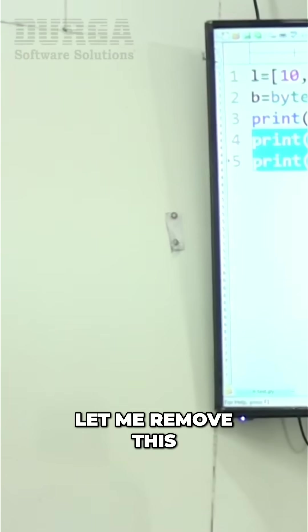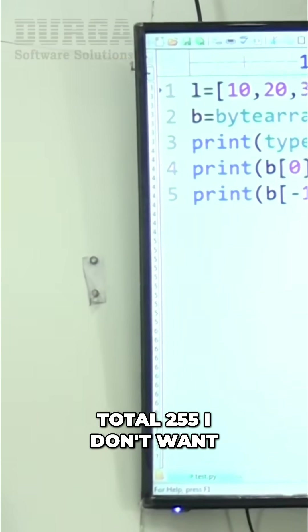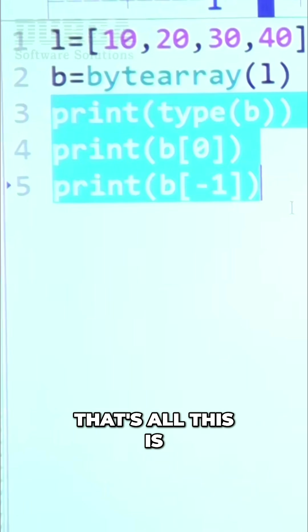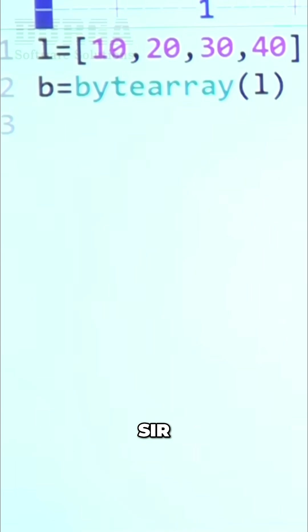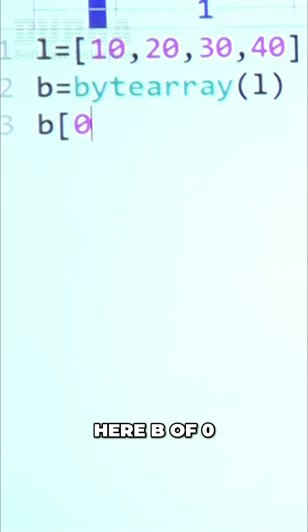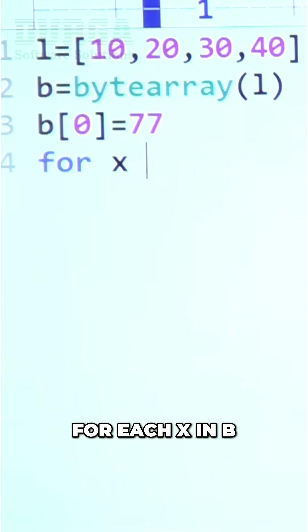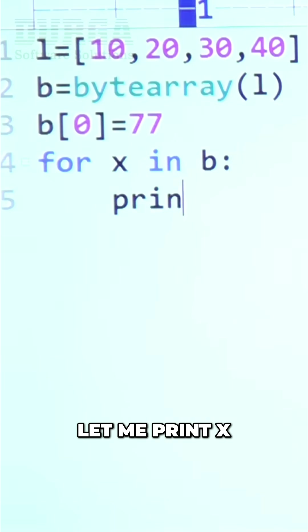Let me remove this total 255, I don't want that. Now here, b[0] is equal to 77. I'm taking for each x in b, let me...